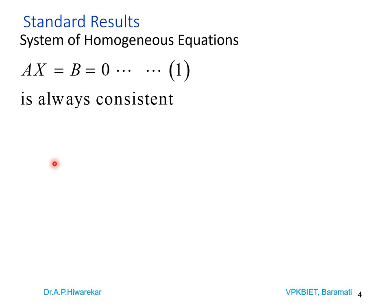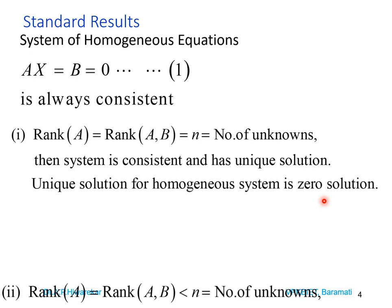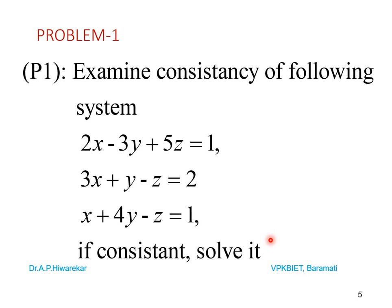For a homogeneous system Ax = 0, such a system is always consistent, so there are only two possibilities. If rank(A) = n, the unique solution is the zero solution. If rank(A) < n, the system has infinitely many solutions.